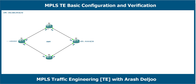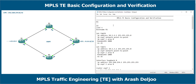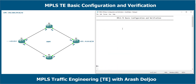Let me start with this scenario. In this scenario we have R1, R2, R3, and R4 — you learned about this scenario in the previous video. I configured one loopback zero in R1, R2, R3, and R4. I also configured OSPF, and as you can see, we have different bandwidths in this scenario.